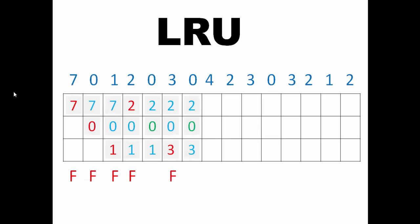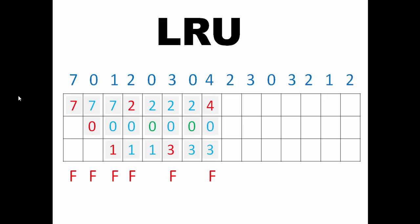The next page is 0, which is already present, so there will be a page hit. The next page is 4, which is not present in the page frame. Looking at usage, 0 is the most recently used, then 3, then 2 — so 2 is the least recently used and will get removed. 4 will get added, there will be a page fault, and 0 and 3 will remain.